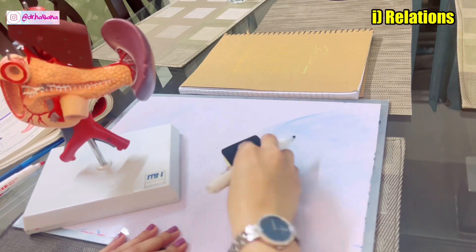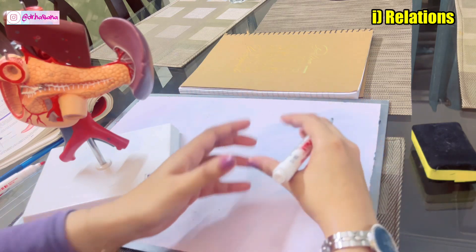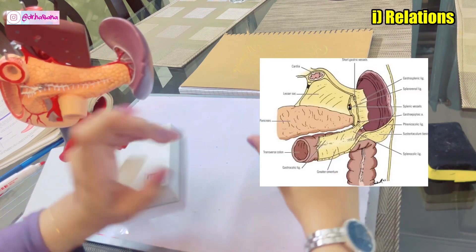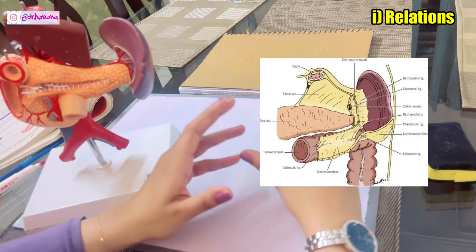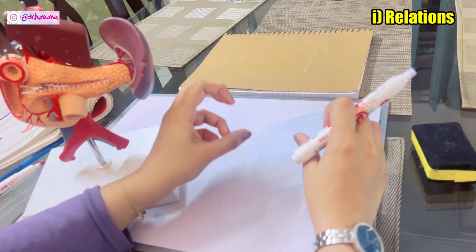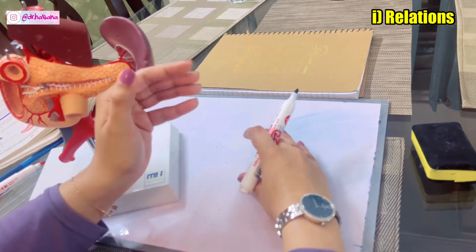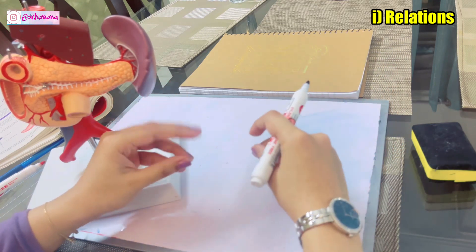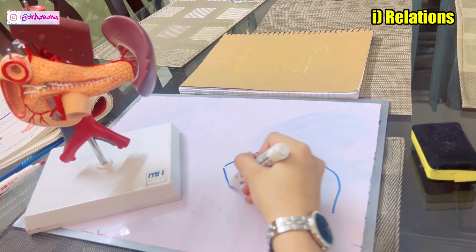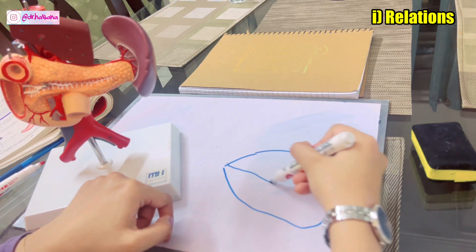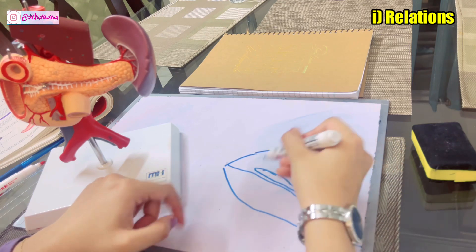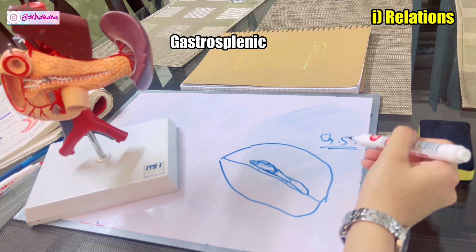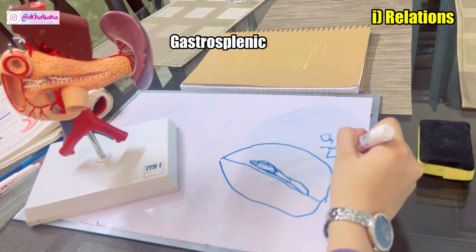Let's talk about the relations of the spleen. We're going to divide it into two parts: peritoneal and visceral. Peritoneal means what are the folds of peritoneum in relation to the spleen. These peritoneal folds extending between organs are ligaments. In the hilum of the spleen, there are two important peritoneal folds or ligaments. One is the gastrosplenic ligament, and then we have the lienorenal ligament.